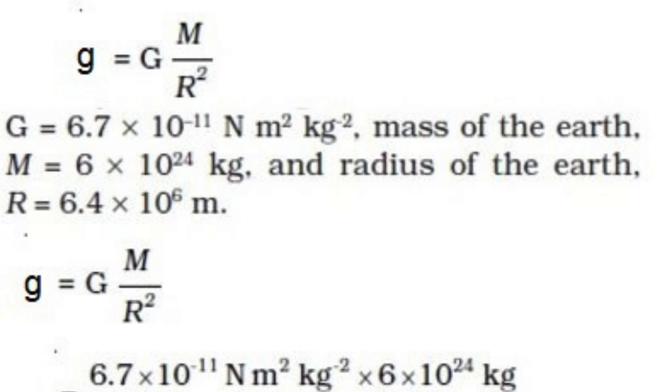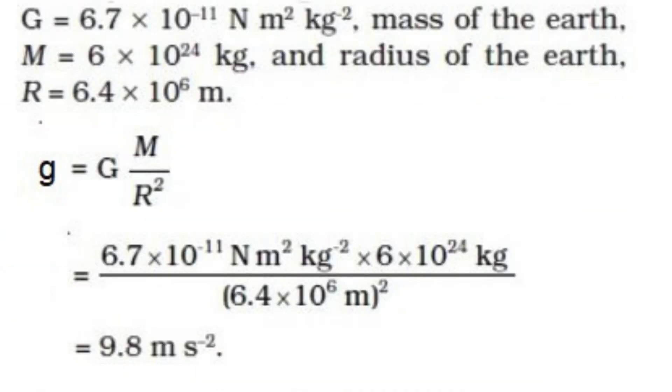Capital G is the Gurutvakarshan constant: 6.6674 multiply by 10 to the power minus 11, Newton multiply by meter square, divided by kg square.